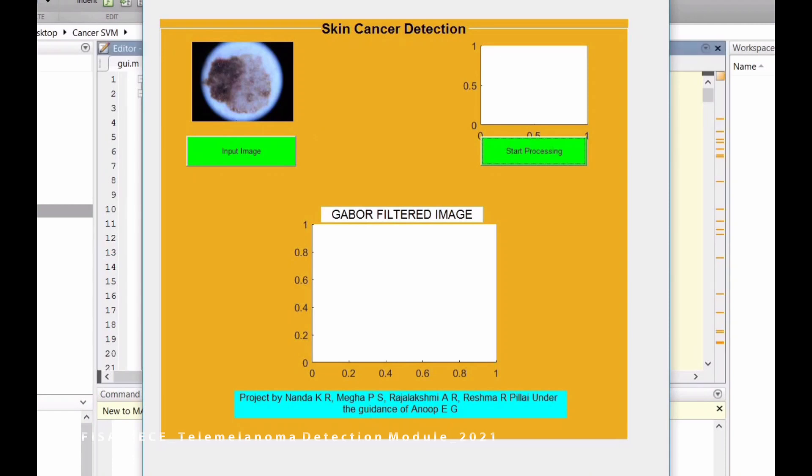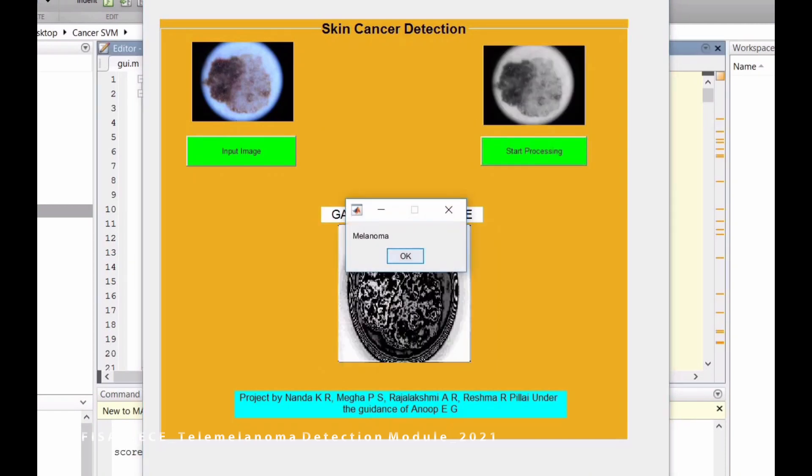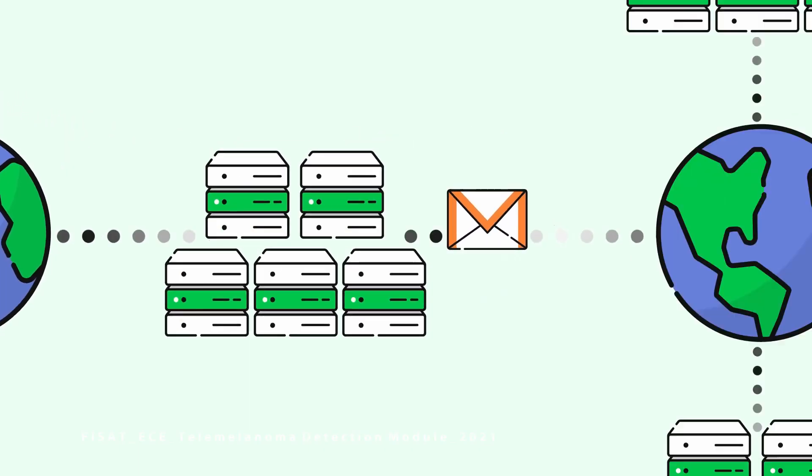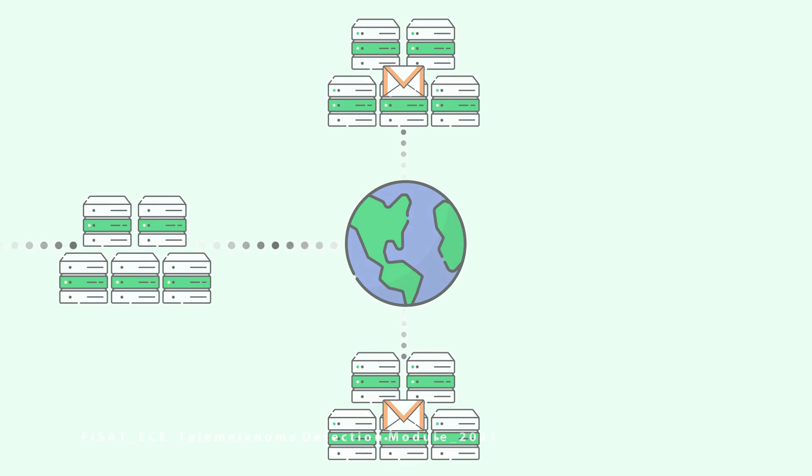After classification, if the skin lesion is found to be cancerous, then details of the corresponding person are sent to the nearest dermatologist via email.